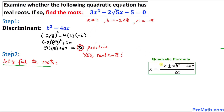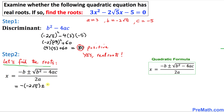For that purpose, we will use the quadratic formula. Let's plug in the values. So we have negative b — b is negative 2 square root of 5 — plus or minus the square root of the discriminant, which we already figured out is 80, divided by 2 times a, which in our case is 3.